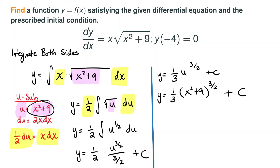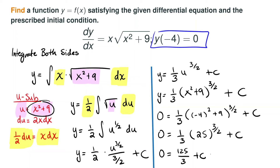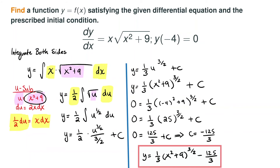If we didn't have our initial condition, this is where we would stop. However, since we are given that when x equals negative 4, y equals 0, we can solve for C. Substituting negative 4: we get 16 plus 9 equals 25, so 0 equals 1/3 times 25 to the 3/2 plus C. The square root of 25 is 5, cubed is 125, so 0 equals 125/3 plus C, meaning C equals negative 125/3. Our final answer is y equals 1/3 times (x² + 9) to the 3/2 minus 125/3.